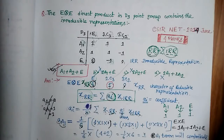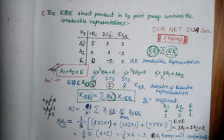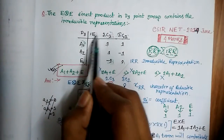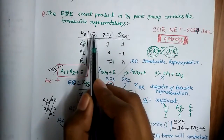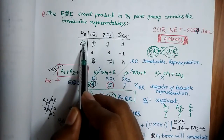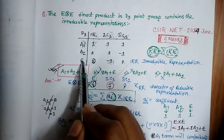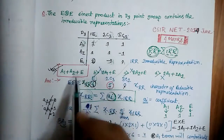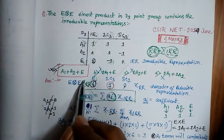The question is: given the E cross E direct product in the D3 point group, find the irreducible representations it contains. The character table of the D3 point group is given, with symmetry elements E, C3, and C2, with classes 1, 2, and 3 respectively. The irreducible representations A1, A2, and E are listed. You have to find the value of E cross E, which gives the characters of a reducible representation.